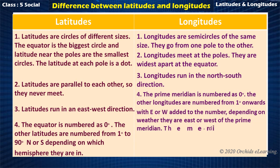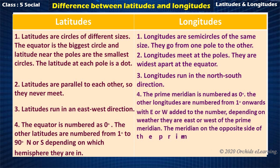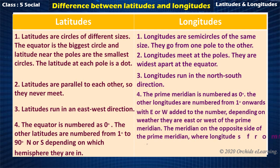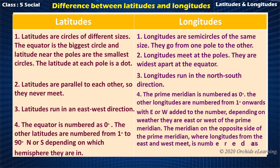The meridian on the opposite side of the prime meridian — where longitudes from the east and west meet — is numbered as 180 degrees and is called the 180th meridian.